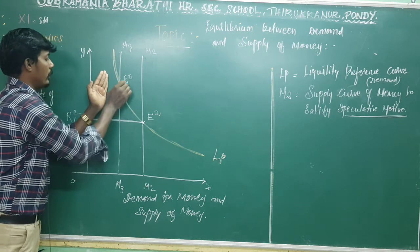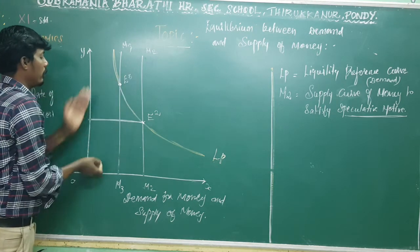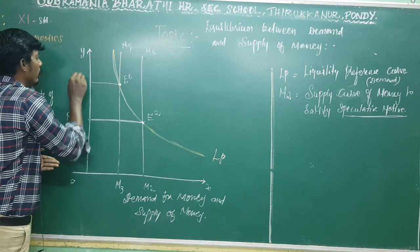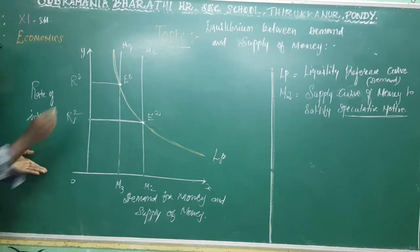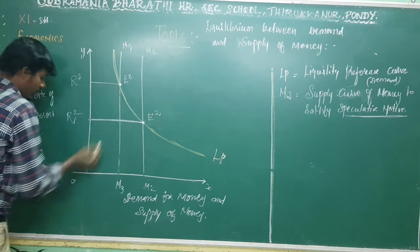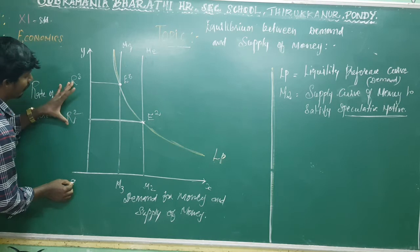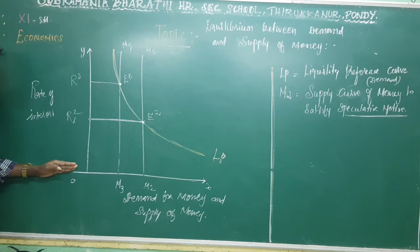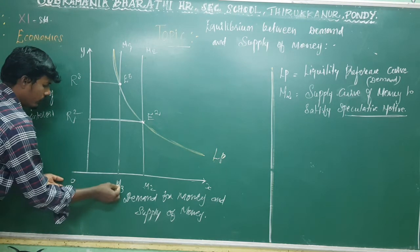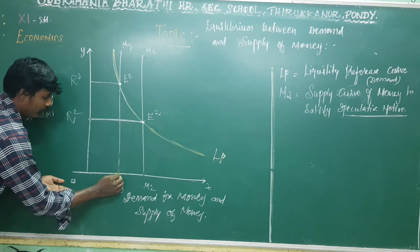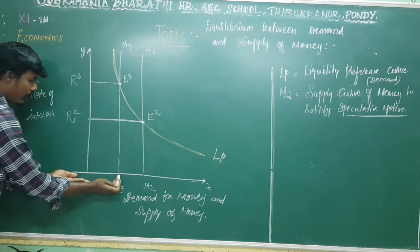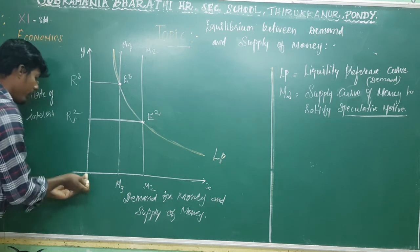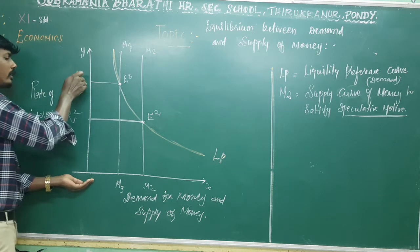You can see E3. So the rate of interest is R3. The rate of interest is R3, but money is less. The supply of money is M3. Supply of money is M3, which is less than M2. But the rate of interest R3 is also less.